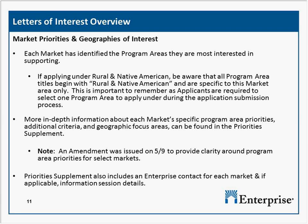The markets in those 13 areas provided additional information about their specific program area priorities in a priorities supplement, which also includes any additional criteria or if a program area is limited to a particular geography. Yesterday, we sent out an amendment to the LOI to provide clarity around the program area priorities for select markets: Chicago, Denver, Detroit, Gulf Coast, New York, Northern California, Southeast, and Southern California. If you're an applicant applying under one of those markets, we encourage you to head to our website and click on the LOI again to see what those changes are.